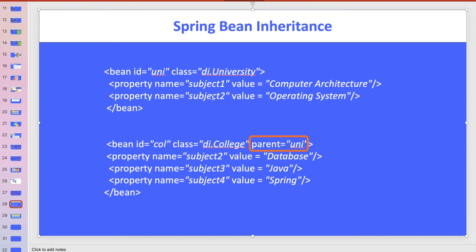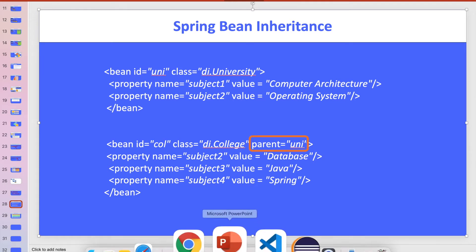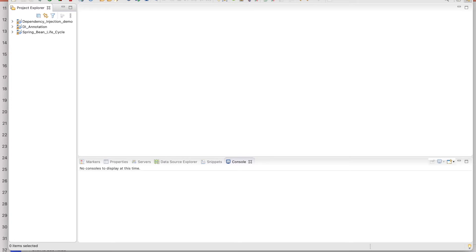For subject two, it is overridden by College. The College says it doesn't want to teach Operating System as subject two — it will decide its own subject two, which is Database. So this child object inherited subject one, overwrote the inherited value for subject two, and subject three and subject four are additional subjects specific to this College.